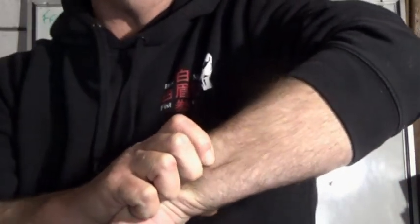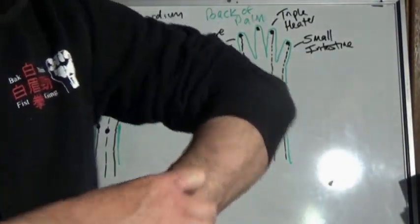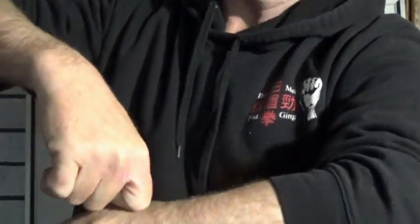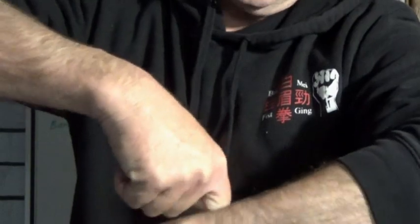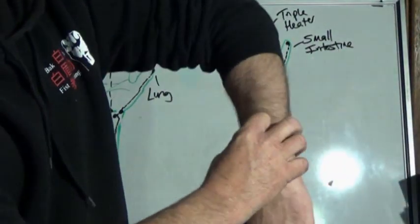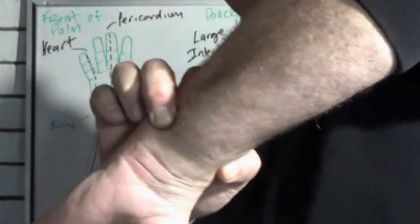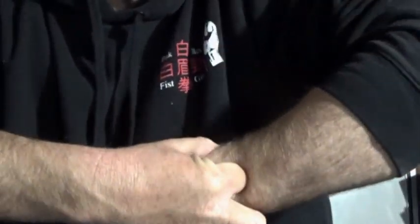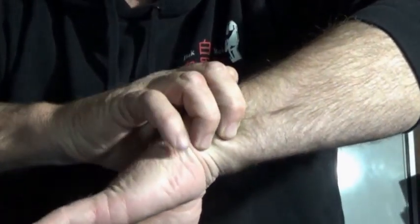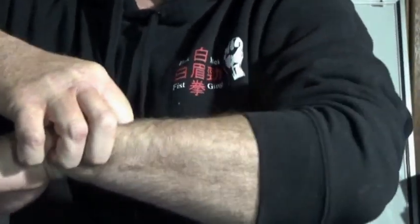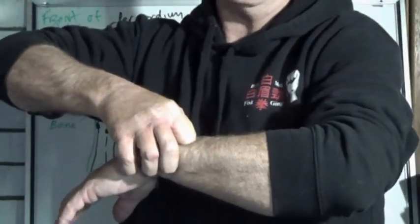The dim mak way is to use these two fingers and your knuckle is going to be going into the triple heater point like this, and on top and these other two secure and you use ding.